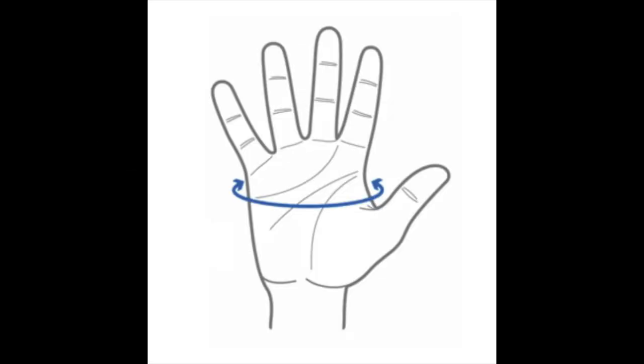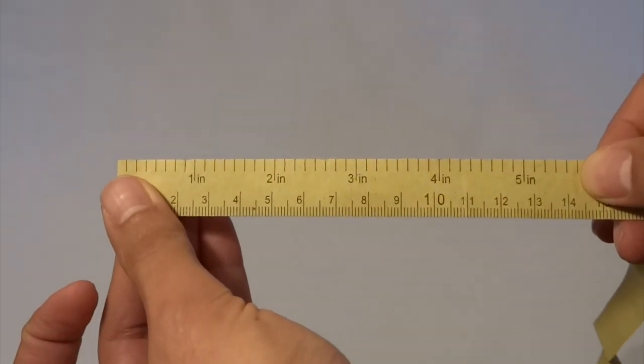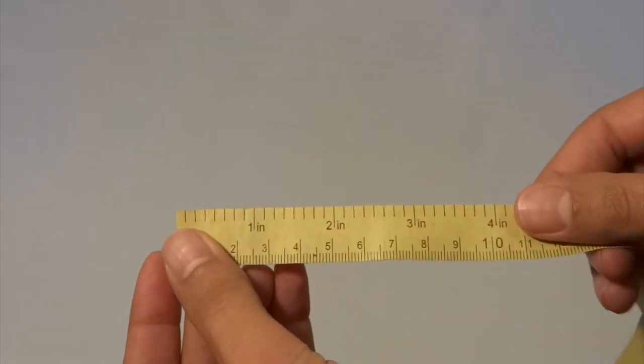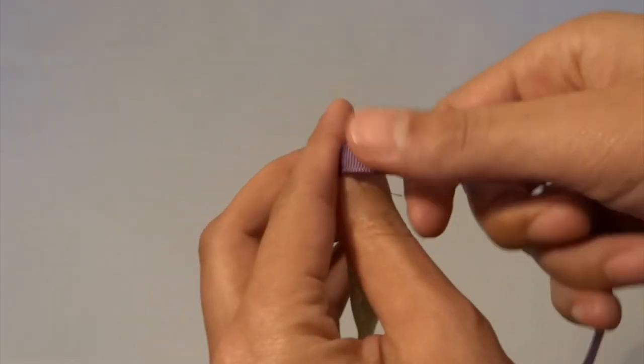To properly measure your baby's hand, you will want to measure the circumference of the hand above the thumb. You can do this in one of two ways. You can use a measuring tape or a taut ribbon that you will then use a ruler to measure.